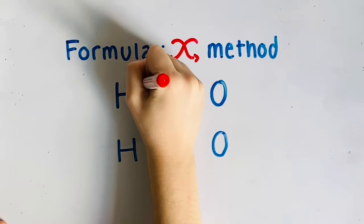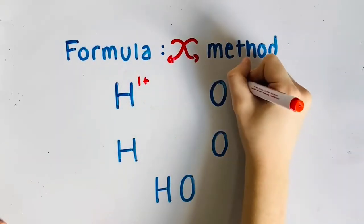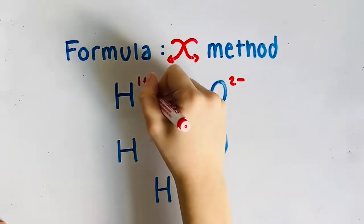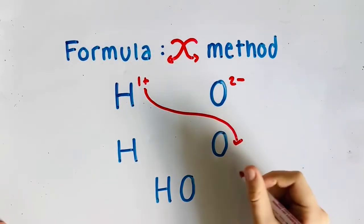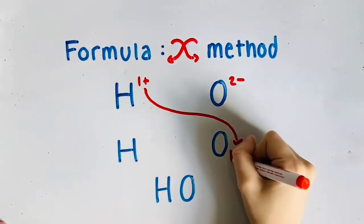To find the formula, we will use the crossover method. Since hydrogen has a charge of one plus and oxygen has a charge of two minus, swapping the charges shows us how many atoms of each are needed to complete a full bond.